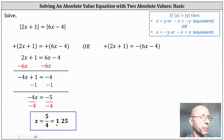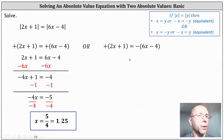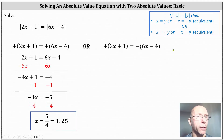Note that giving the decimal here is okay as long as it terminates. We would never want to round the decimal because then the solution is no longer exact. Now for the second equation, we can drop the parentheses on the left. On the right, we take the opposite of each term inside the parentheses, or distribute negative one. This gives us 2x plus 1 equals negative 6x plus 4.